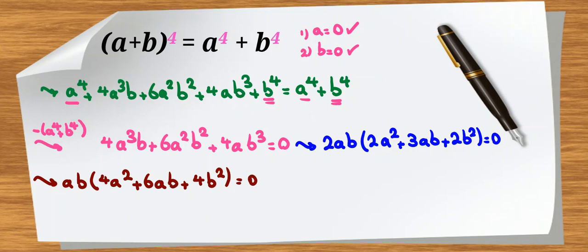Now, we have product of three terms. First term, second term, and third term equal to 0. So first term equal to 0 or second term equal to 0 or third term equal to 0.